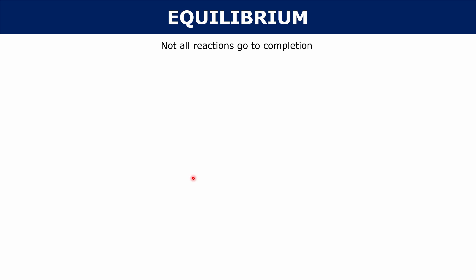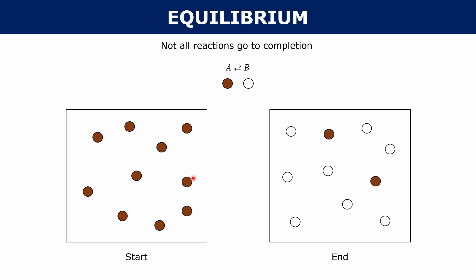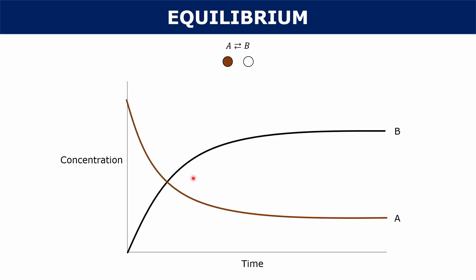However, not all reactions go to completion. You could have a reaction where A is in equilibrium with B. At the start you have a bunch of these brown A reactant molecules, but at the end you have some B product molecules, while some of those reactant brown A molecules are still present. If you were to graph the concentrations of A and B over time, you would have a curve where the concentration of A goes down for a period of time and then starts to stabilize.